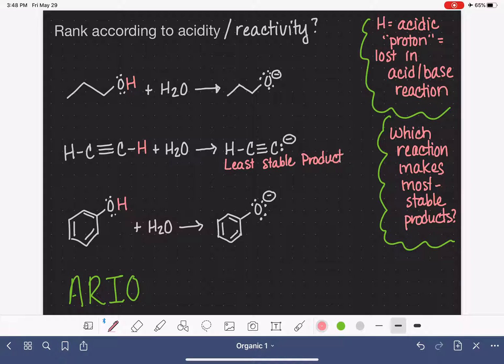And we're not ready to draw conclusions about what that means in terms of reactivity just quite yet. Right now, we're just ranking stability. So now we're looking at oxygen versus oxygen, and ARIO is not going to help us in that regard, which means we have to move on to factor number two, which is resonance, yes or no. Looking at this structure right here, because we only have lone pairs of electrons all located on the oxygen atom, there's nowhere for them to go. This molecule has no resonance at all.